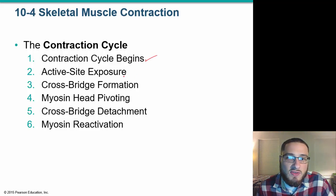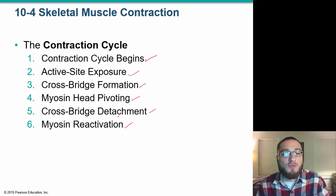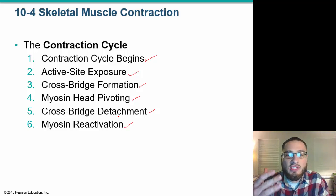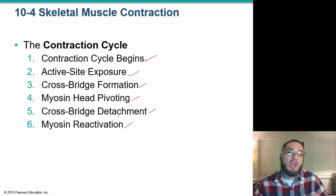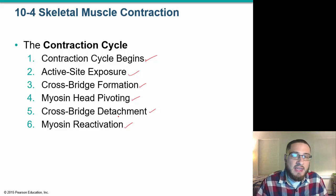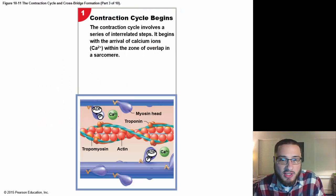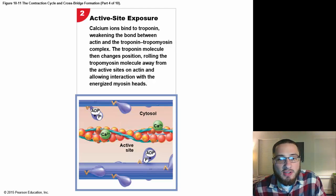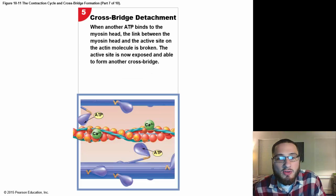The contraction cycle involves: contraction beginning, active site exposure, crossbridge formation, myosin heads pivoting, crossbridge detachment, and myosin reactivation. This happens in a split second — that's how we move. However, if any one of these steps fails, contraction will not occur. We need the triad, acetylcholine, sodium, calcium, ATP, and oxygen — all of these are important. The myosin heads need calcium ions to move tropomyosin away from the actin active site, then the heads connect to actin and continue to pivot and pull the actin inward.